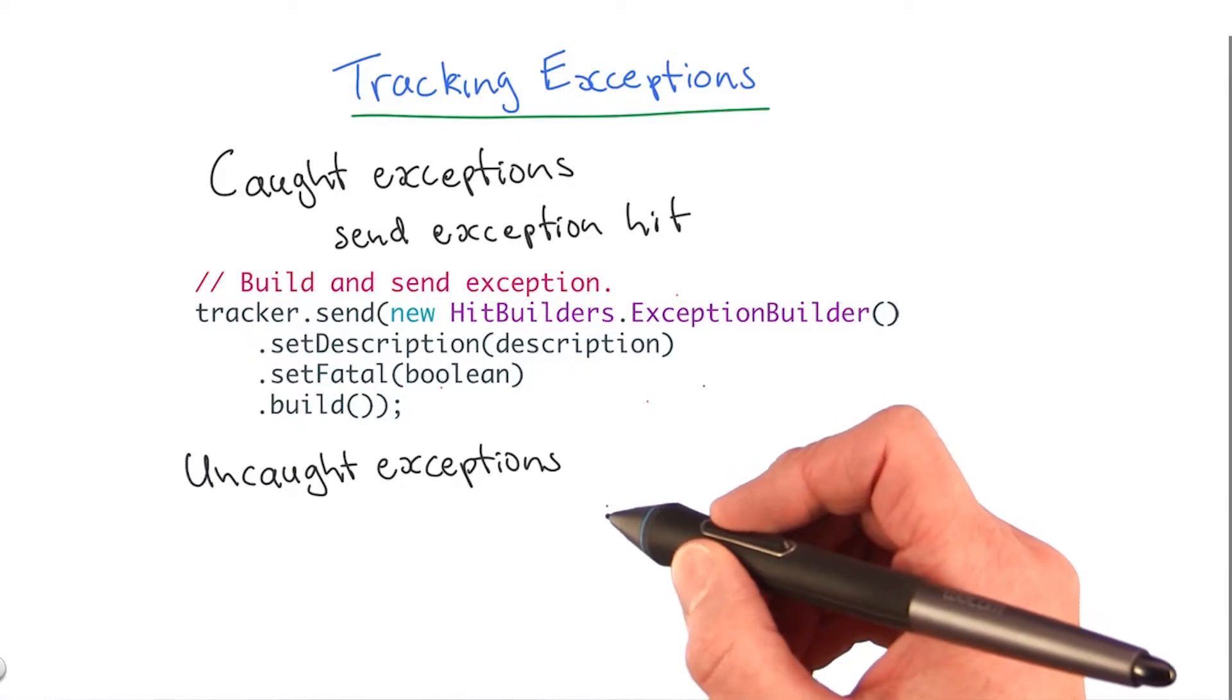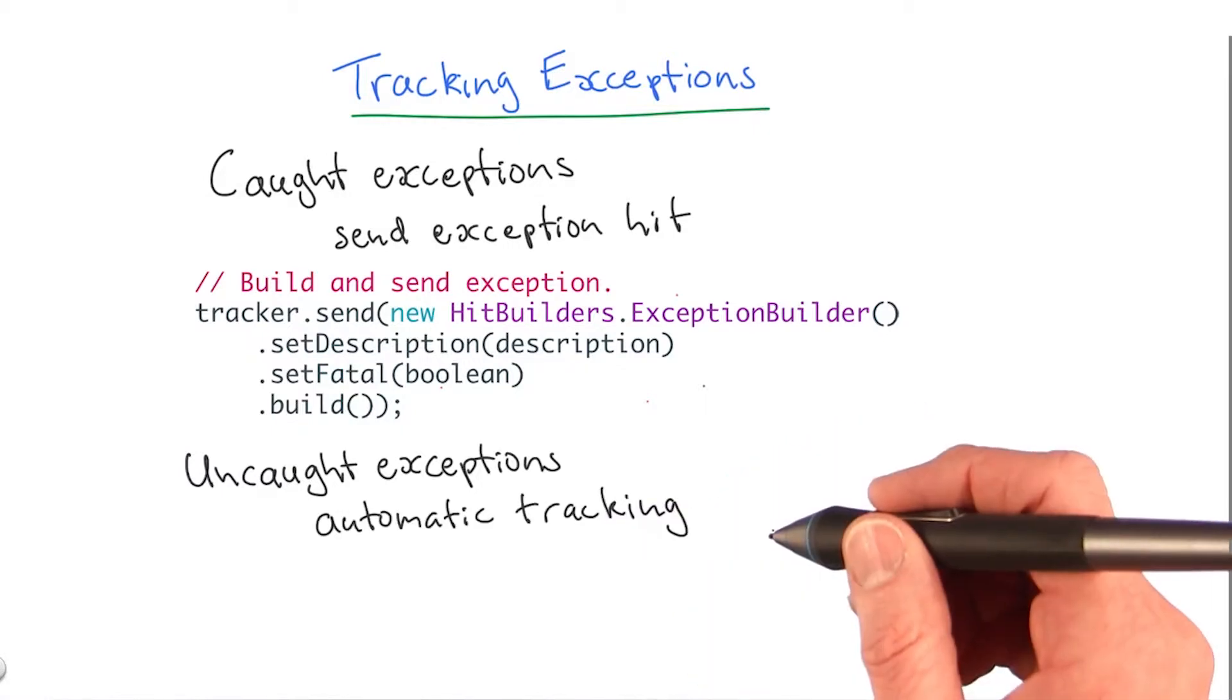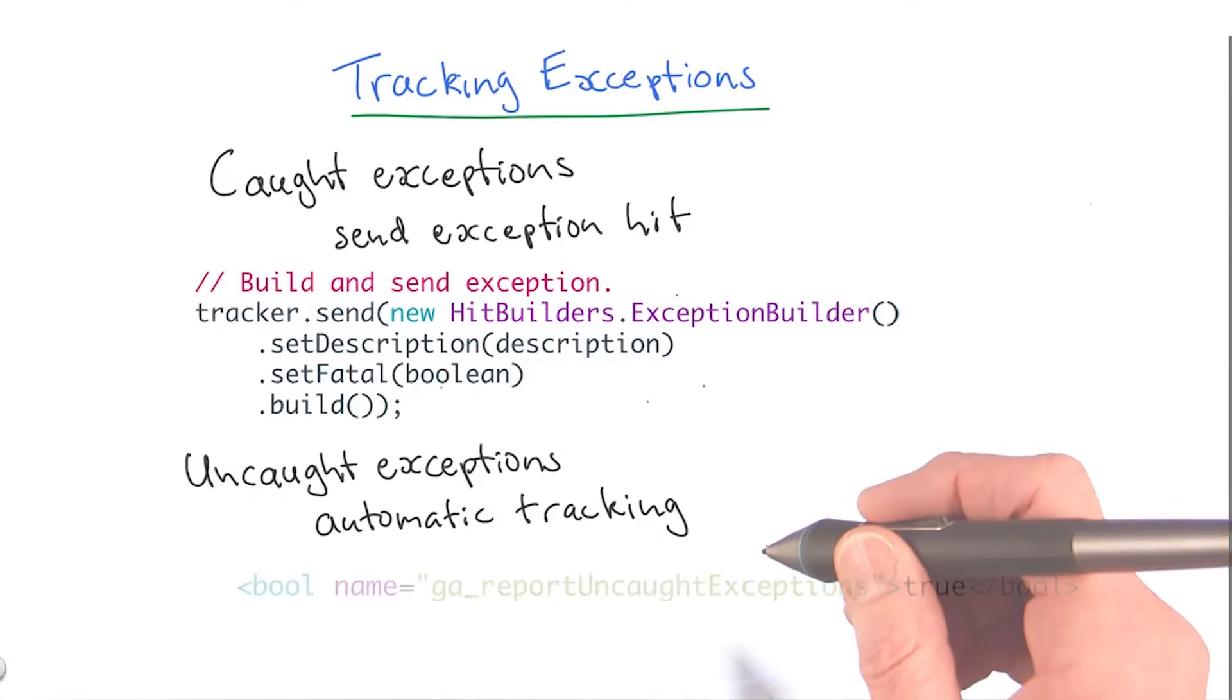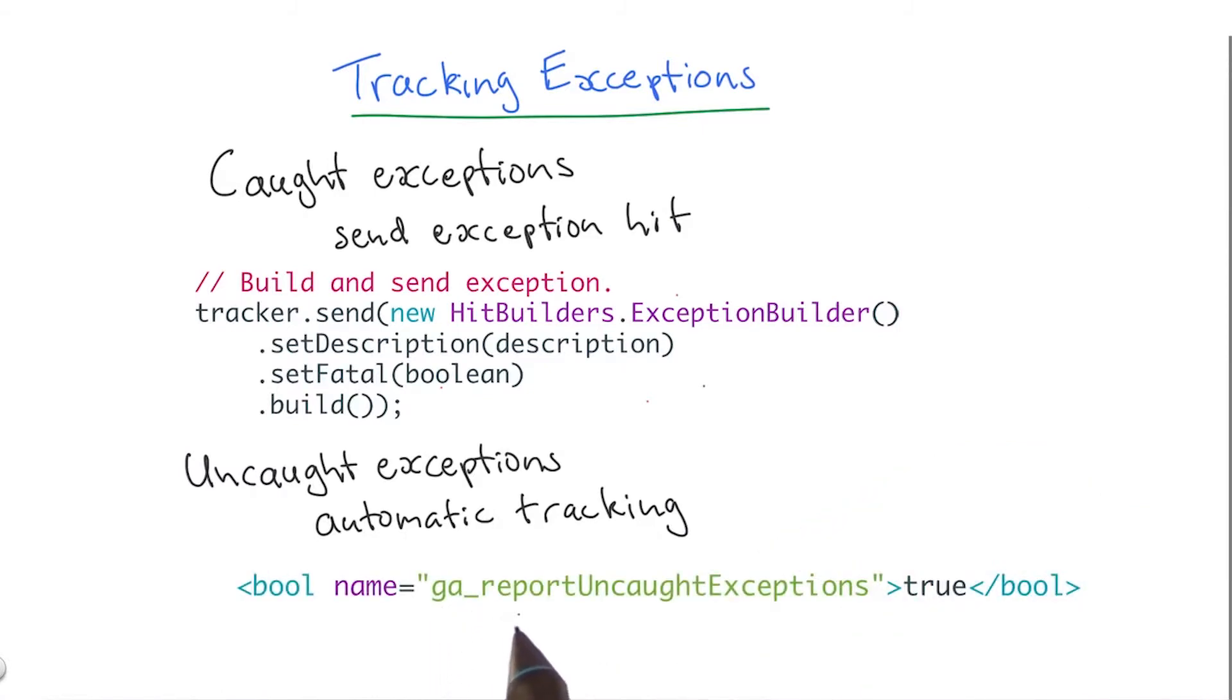However, you can enable automatic tracking for uncaught exceptions. To do this, you set ga_reportUncaughtExceptions to true in the tracker config file.